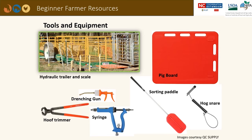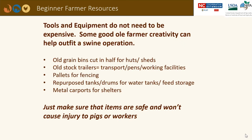Tools like hoof trimmers can be used to trim overgrown toes — make sure to disinfect such tools between uses to prevent transmitting bacteria between animals. Medical and first aid equipment should always be readily available in any operation. Tools and equipment do not need to be expensive; some good old farmer creativity can help outfit a swine operation — things such as shelters made out of old grain bins cut in half, old stock trailers for transporting or working facilities, pallets used for fencing, repurposed tanks and drums for water tanks and feed storage, or metal carports for shelters. Just make sure the items are safe and won't cause injury to either the pigs or your workers.